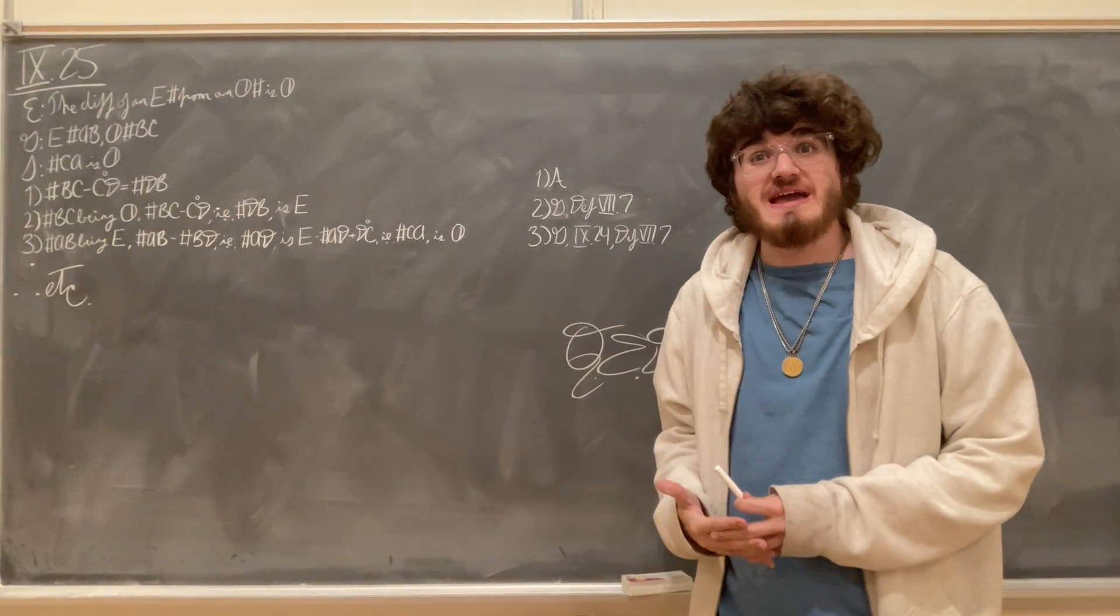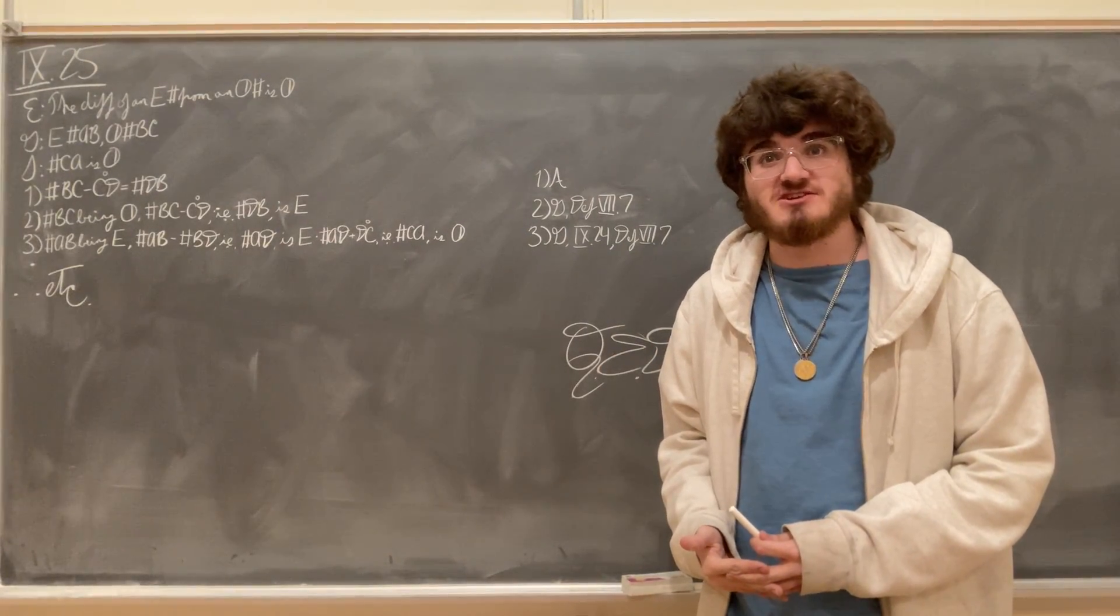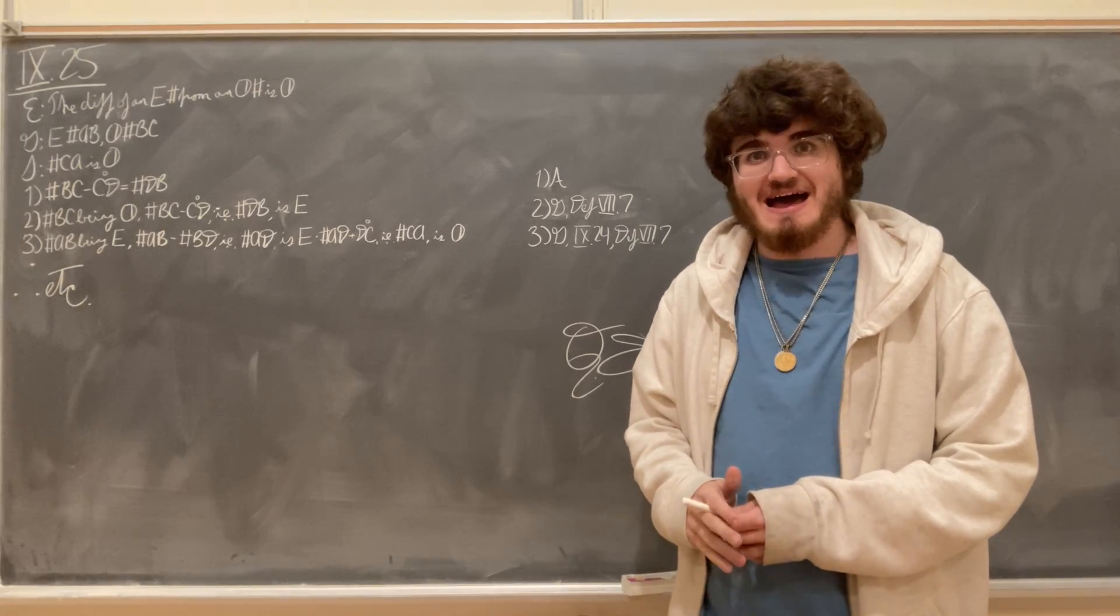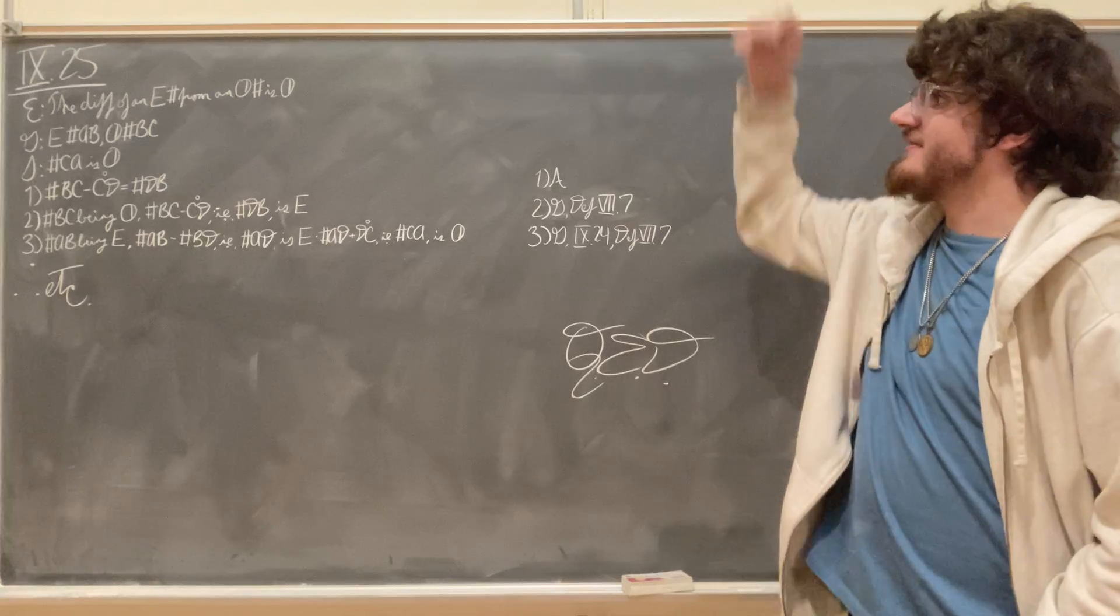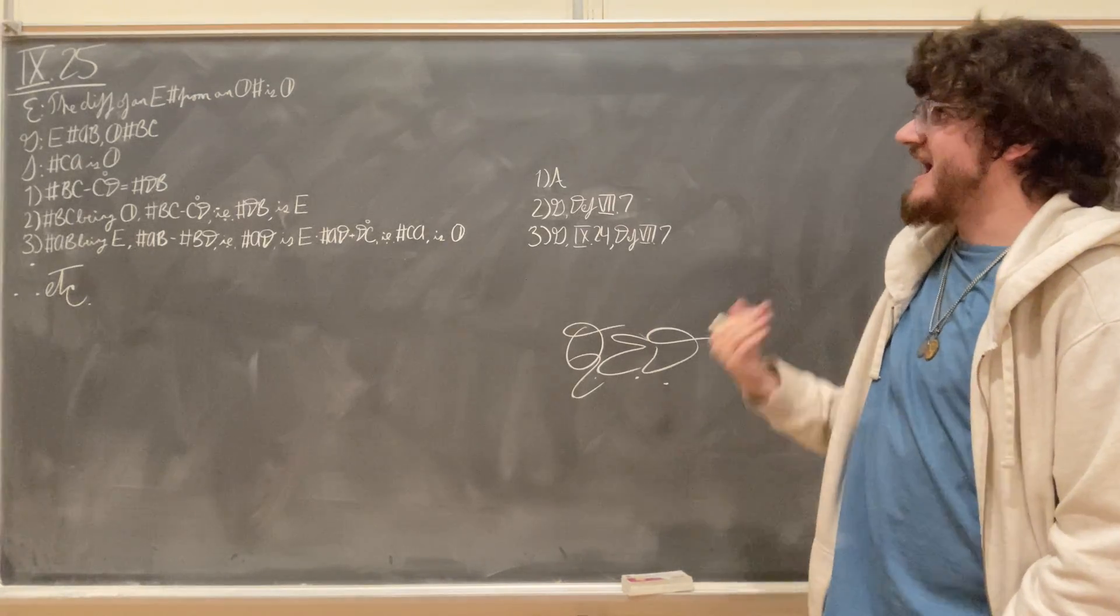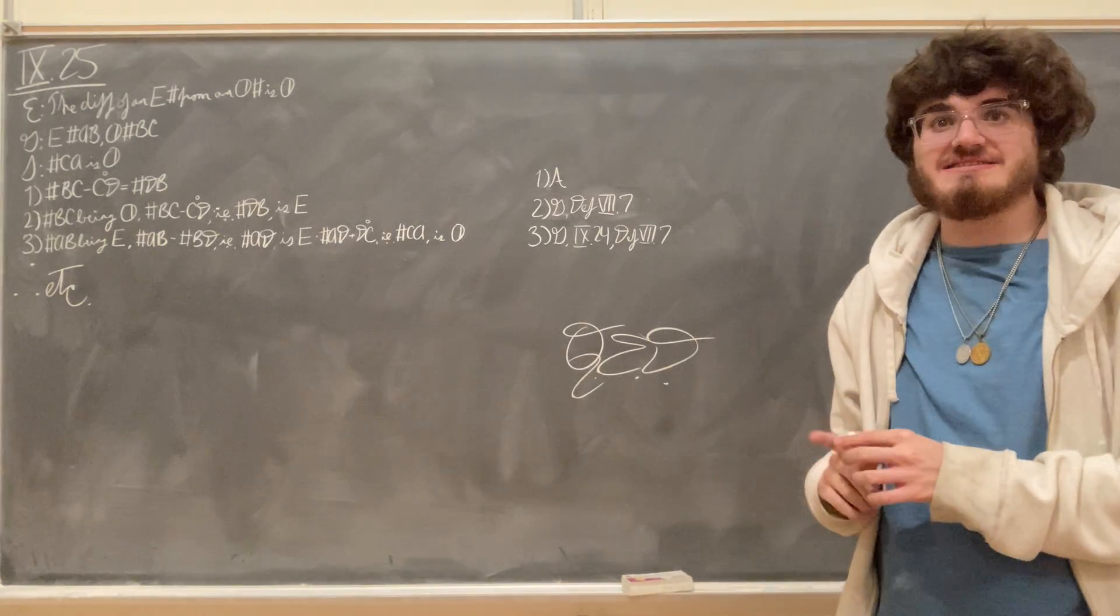Hello! This will be a demonstration of Proposition 25 from Book 9 of Euclid's Elements, which says that the difference of an even number from an odd number is an odd number.